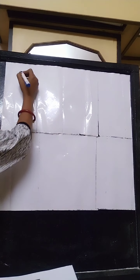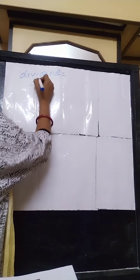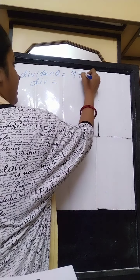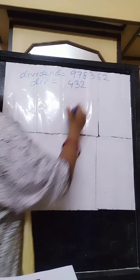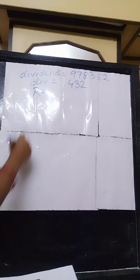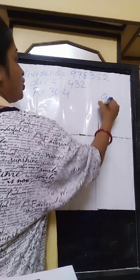Here in this sum, the dividend is given and the divisor is given. Suppose the dividend is 978352 and the divisor is 432. You are asked to find out the quotient when the remainder is given. The remainder is 304 and you are asked to find out the quotient.